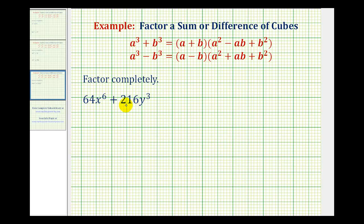The reason I say this is 64x^6 is a perfect cube, and so is 216y^3. We can write 64x^6 as 4x^2 raised to the third, and we can also write 216y^3 as 6y raised to the third power.